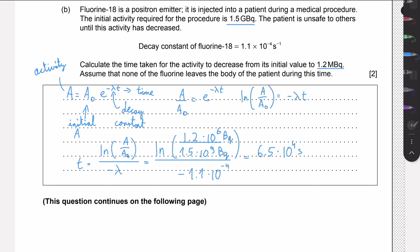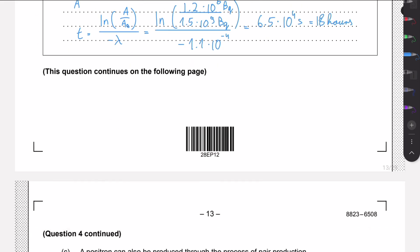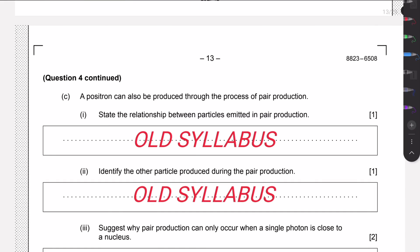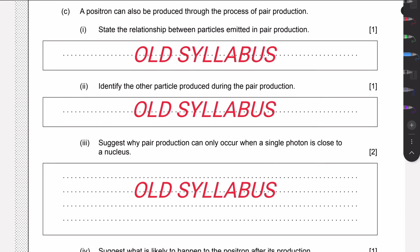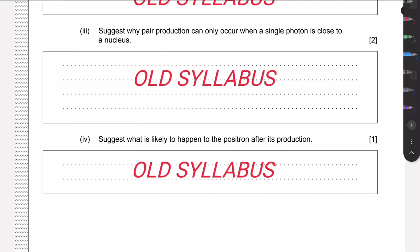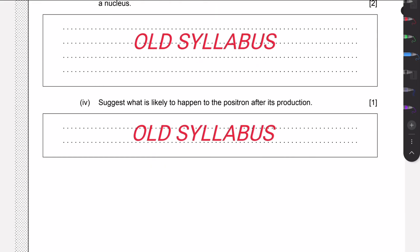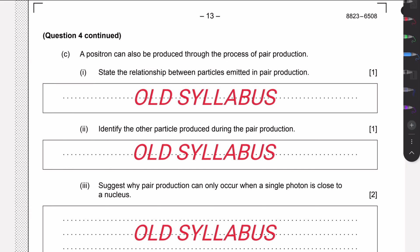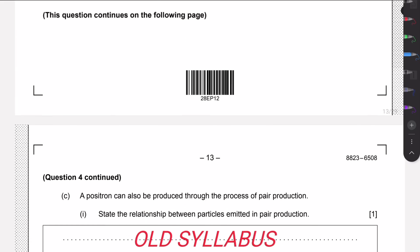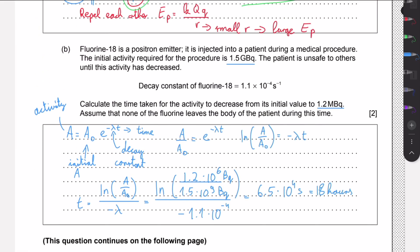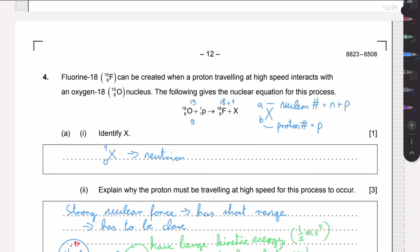This will give us 6.5 times 10 to the 4 seconds. If you would want, you can convert this to hours, which would approximately be 18 hours. That's how much time it will take for the activity to decrease. The next parts of the question were all part of the old syllabus. We don't need to know this anymore. It's not taught in IB anymore from the 2025 exams. So this was about it.